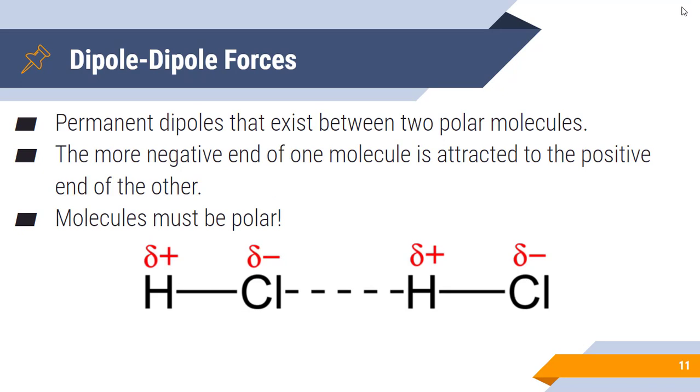The next intermolecular force is dipole-dipole forces. These are permanent dipoles. Polar molecules all have permanent dipoles. They unevenly share electrons, so one atom in the molecule is going to be more negative than the other based on how many electrons it has near it. The negative of one is going to be attracted to the positive end of another molecule. Keep in mind that these molecules must be polar. All polar molecules will have some form of dipole-dipole interaction. The more polar the molecule is, the stronger the dipole-dipole interaction. For example, HCl: the chlorine has more electrons closer to it, therefore it is more negative, which makes the hydrogen more positive.